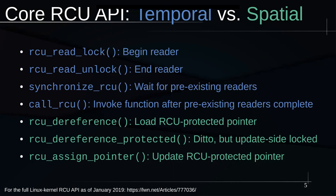The core RCU API has temporal and spatial elements. The blue stuff is temporal: we mark readers starting with rcu_read_lock and rcu_read_unlock, giving the time a reader starts and ends. synchronize_rcu and call_rcu are the synchronous and asynchronous interfaces respectively to wait for all preexisting readers.